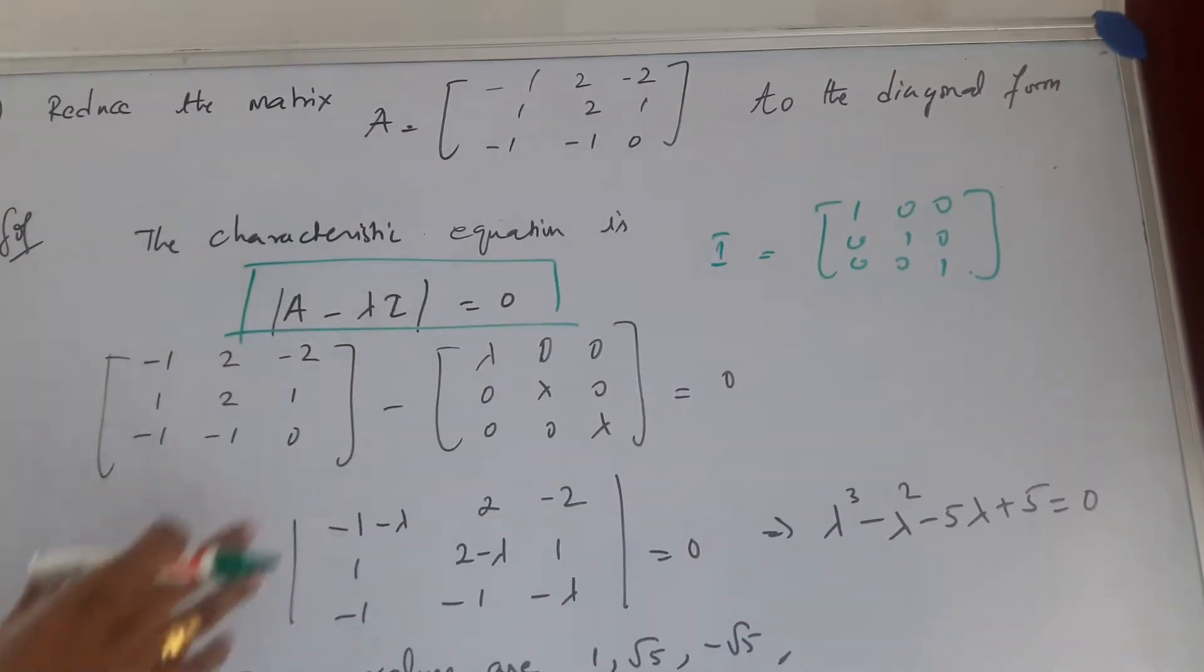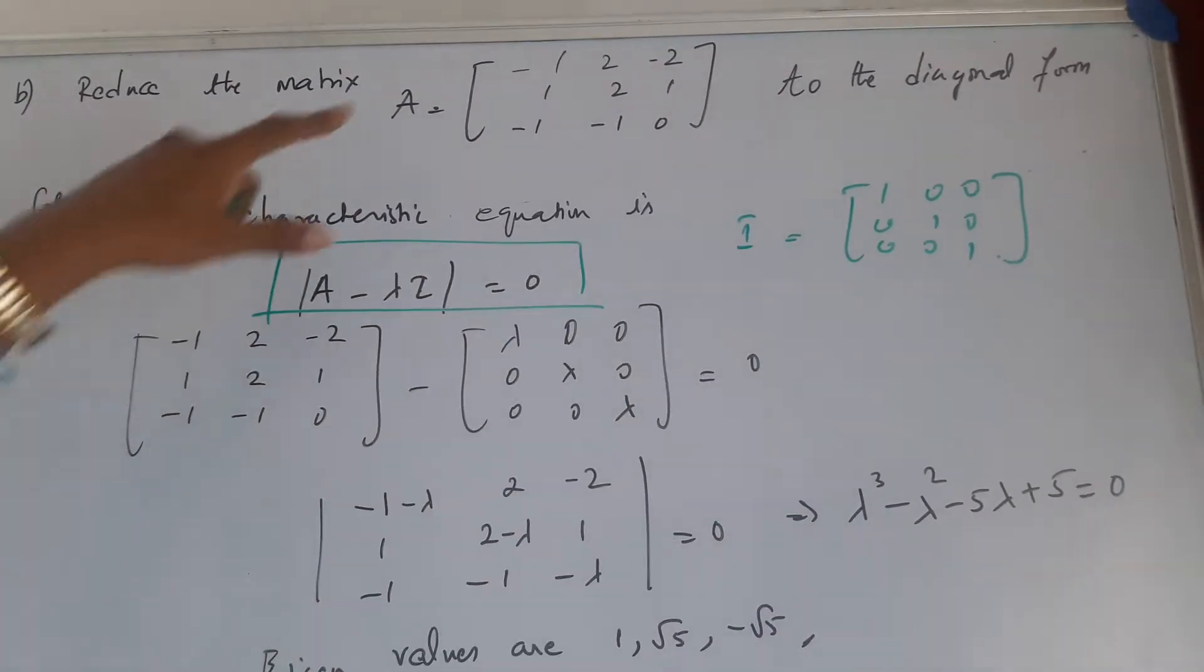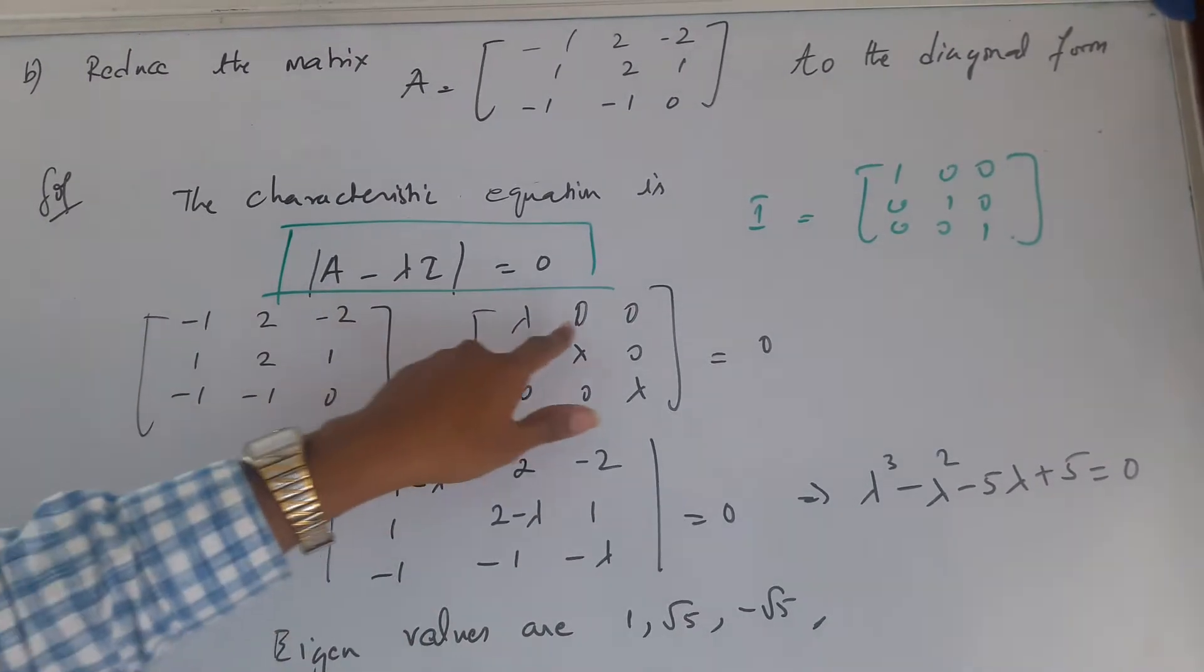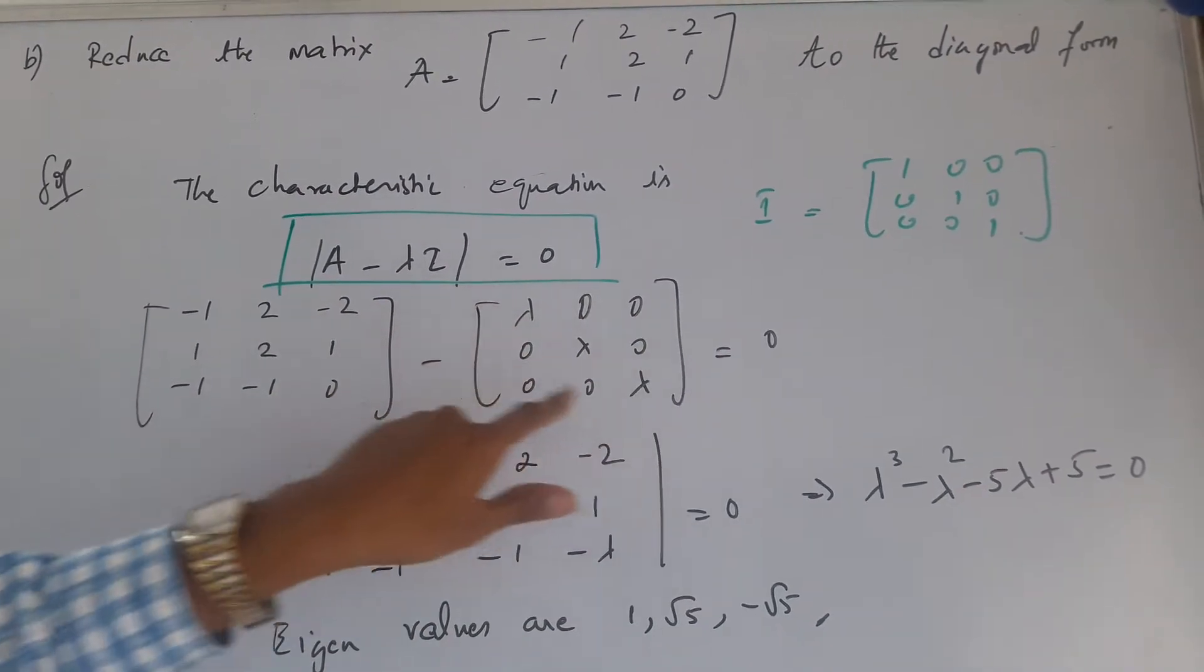So if I compute this together, A is given and lambda times I becomes lambda, 0, 0, 0, lambda, 0, 0, 0, lambda.